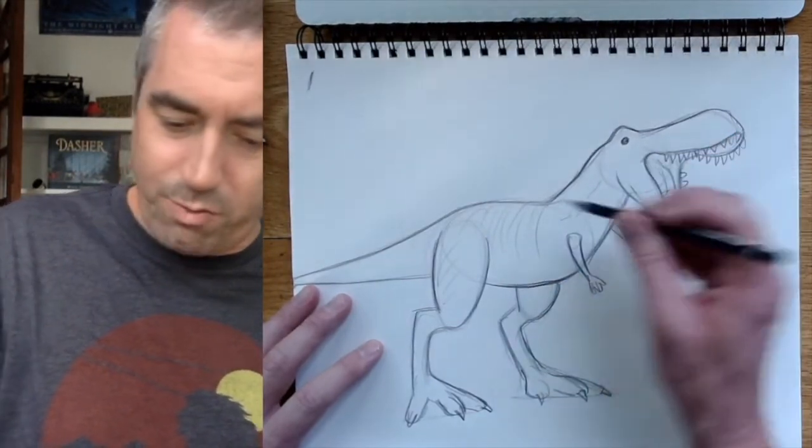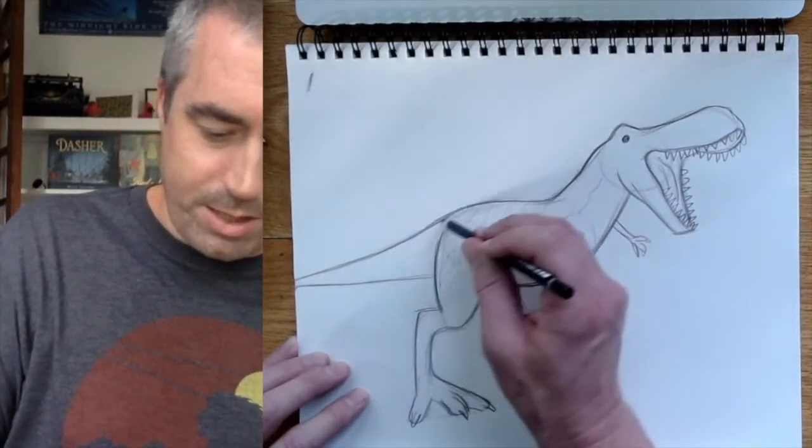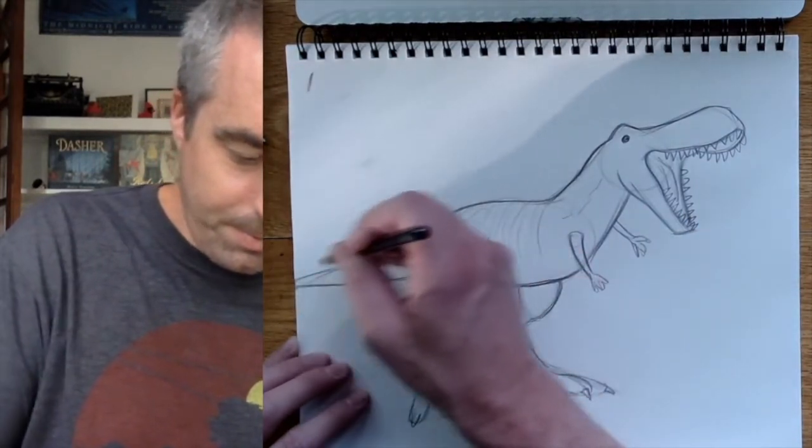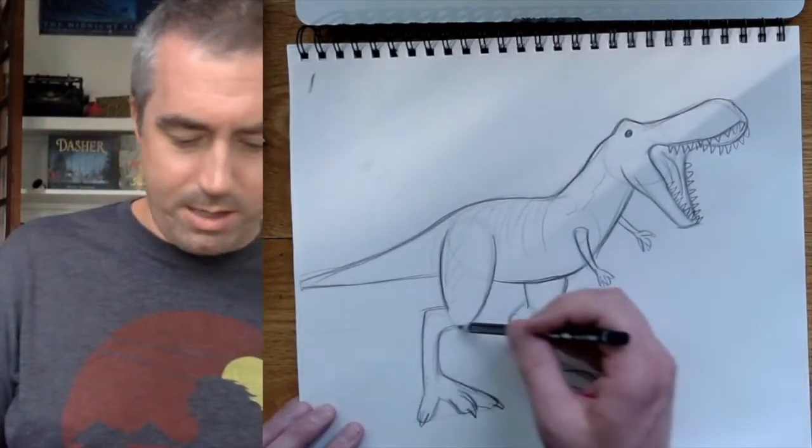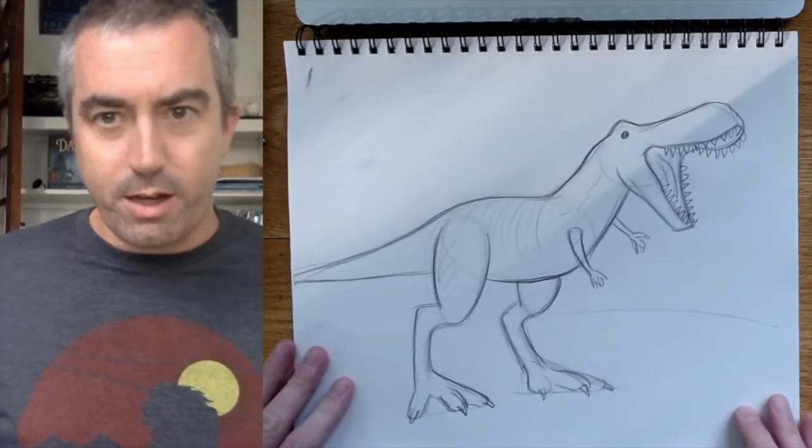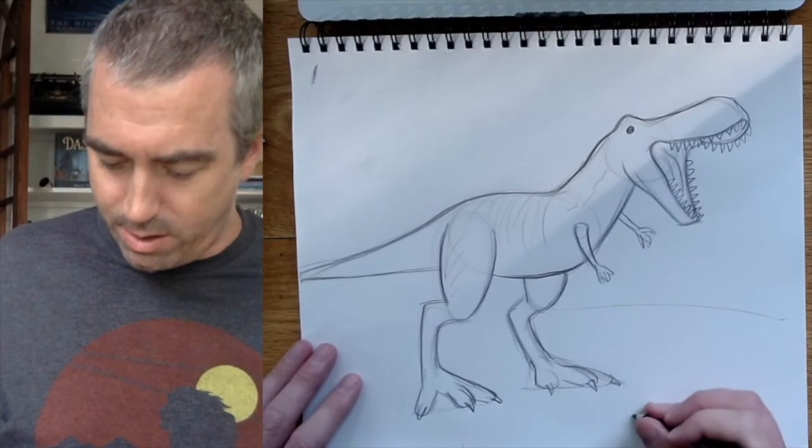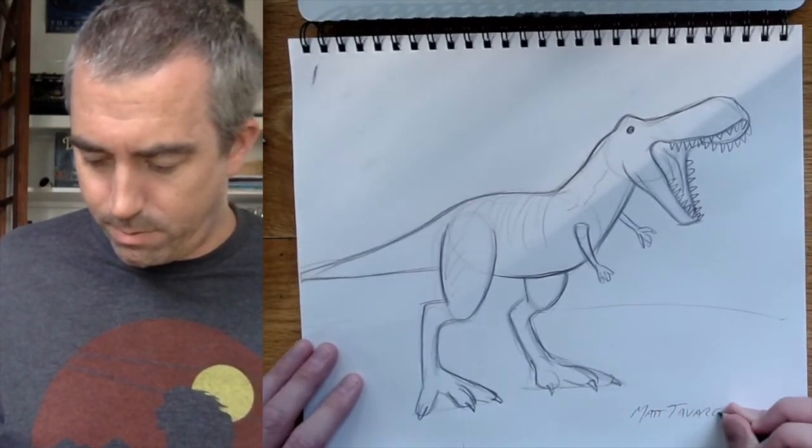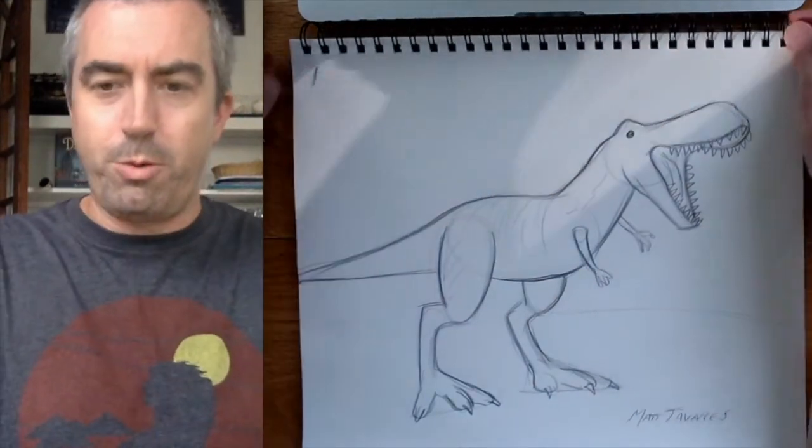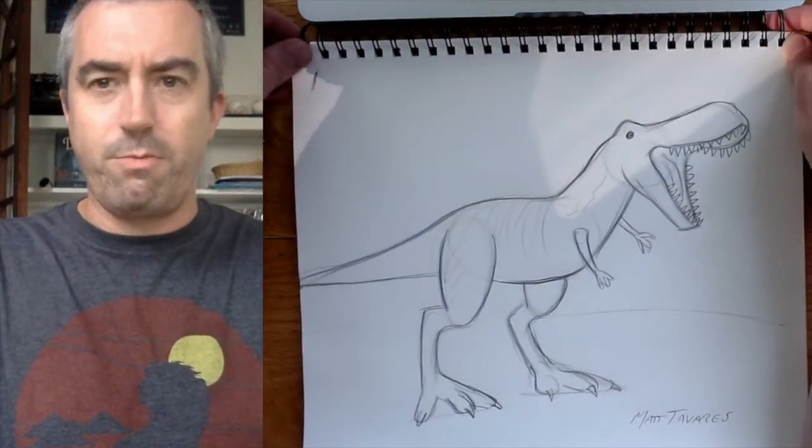So you can add whatever details you want to your T-Rex, but I think I'm going to stop there. All right. And don't forget at the end, sign your work. You got to take credit for it. So I'm going to write down here, Matt Tavares. You can put a date on there too, if you want, and you can remember when you drew it.